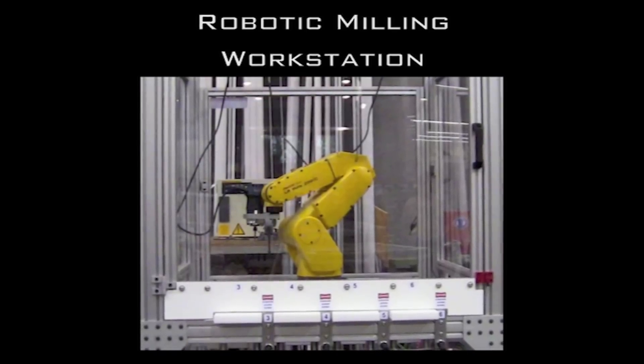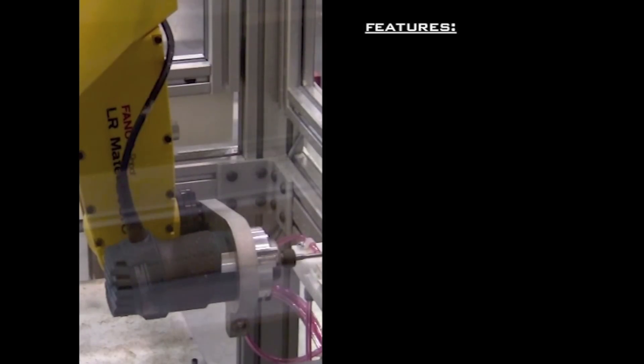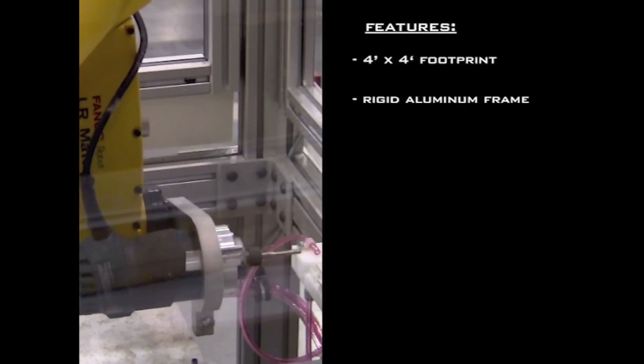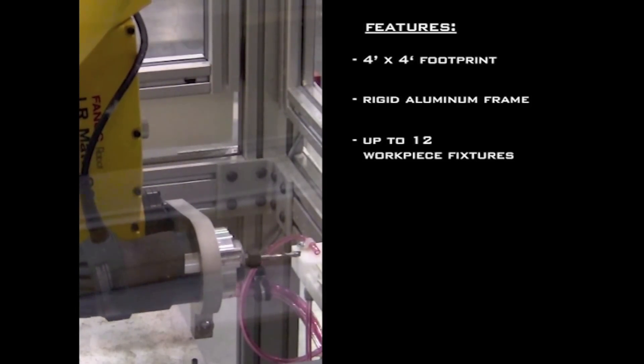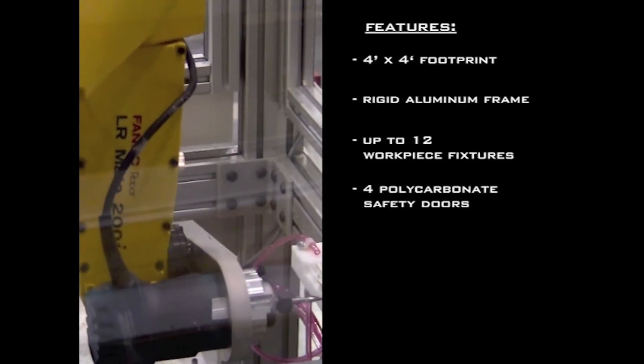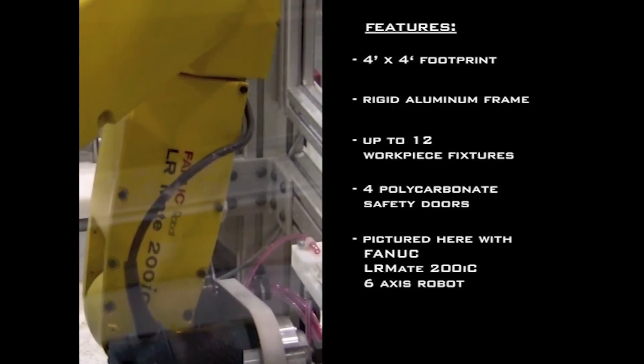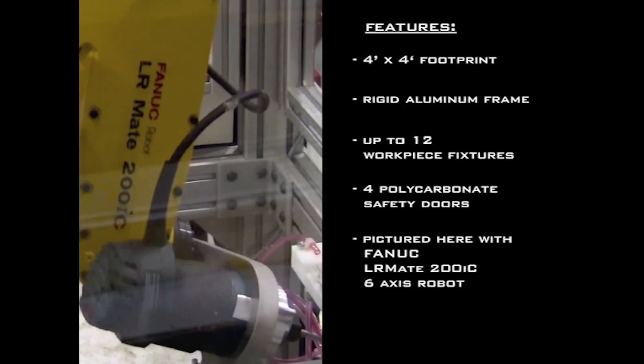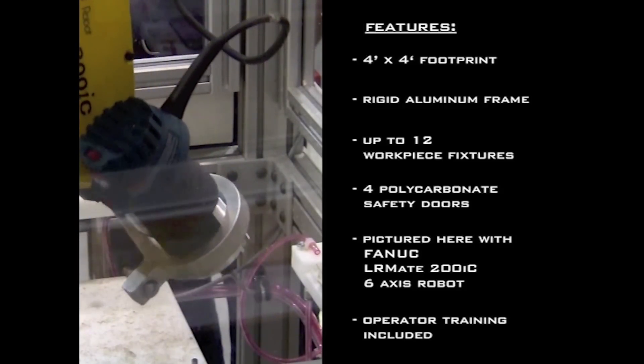The robotic milling workstation features a 4x4 footprint, a rigid aluminum frame, up to 12 workpiece fixtures, four polycarbonate safety doors, FANUC's highly reliable, versatile, and compact LR-Mate 6-axis robot, and operator training is included.